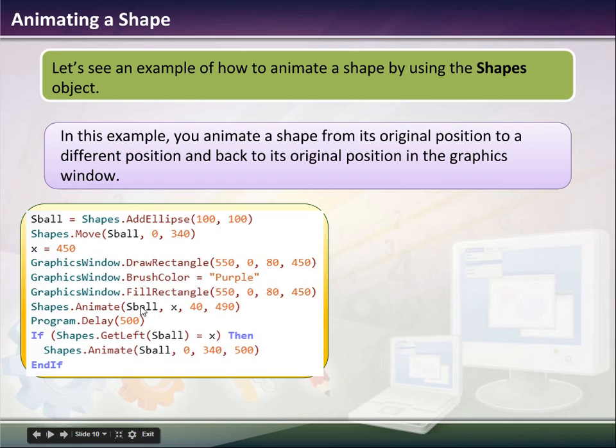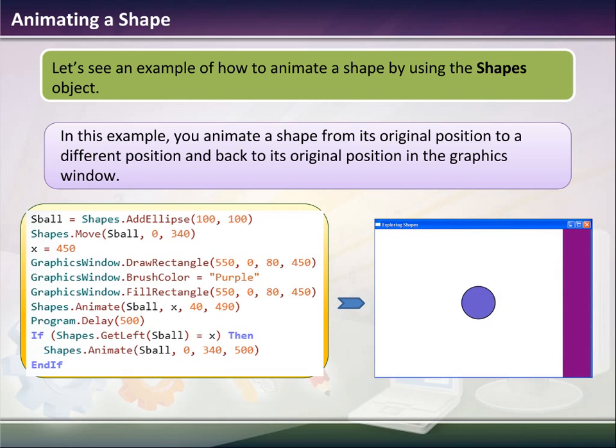Then we're going to animate the softball. So the softball, when we animate it, will be 450, 400, 490. Then we're going to delay. And then we're going to get left. If the shapes get left is equal to x, then animate the softball. If that statement's untrue, then we'll forward.